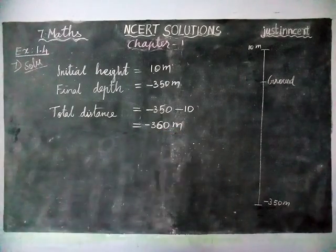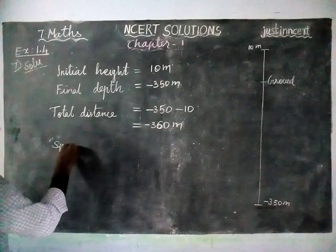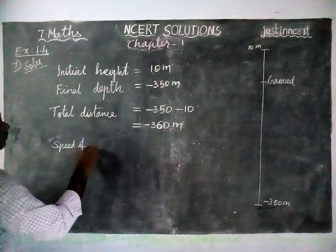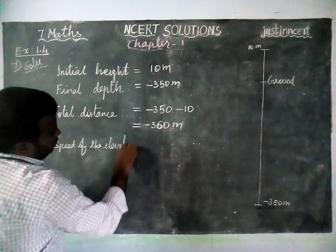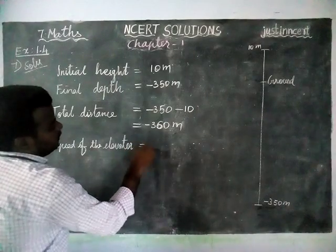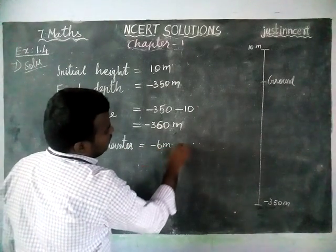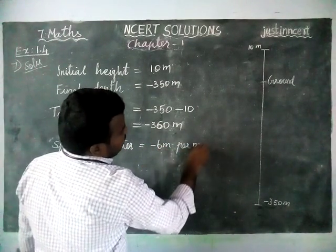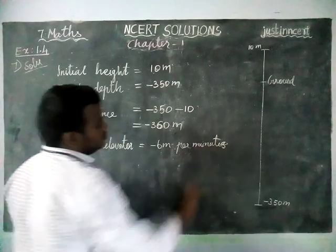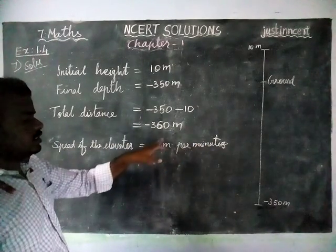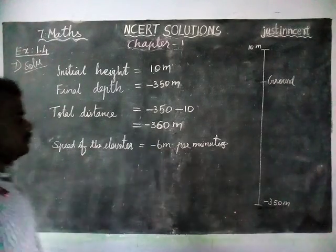Now, the speed of the elevator is equal to minus 6 meters per minute. We take minus because it is going down — per minute it is going 6 meters down, so we take minus 6 meters per minute.